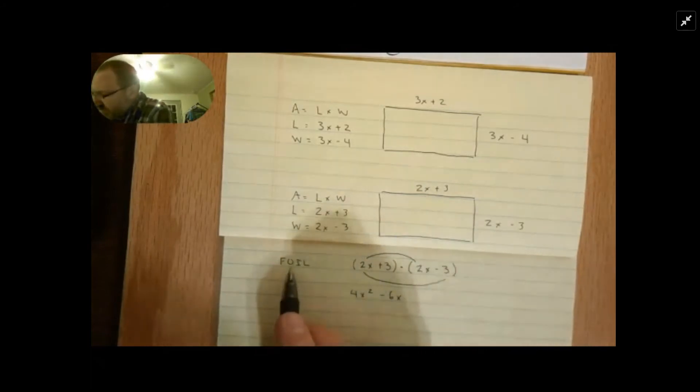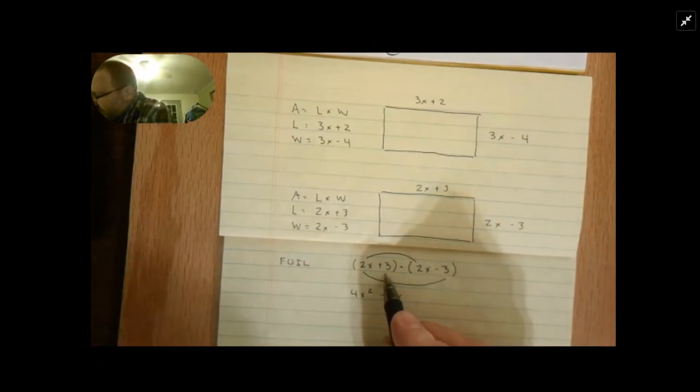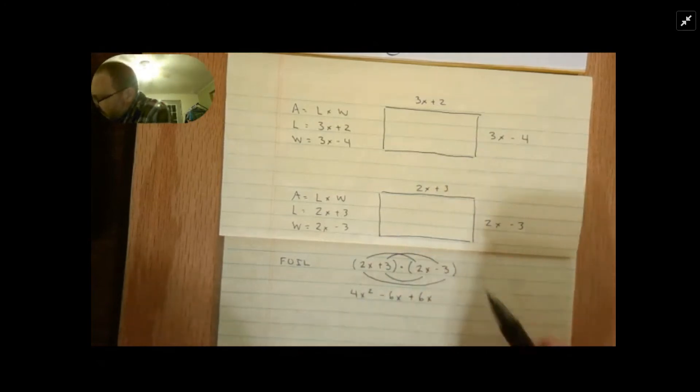Inner times inner, the I means inner, so 3 times 2x would be plus 6x. And then last times last, which in this case is negative 9.